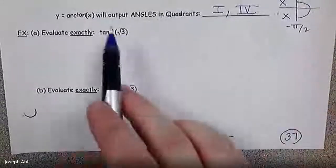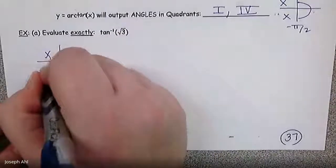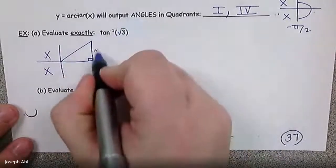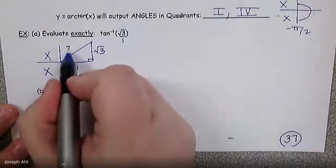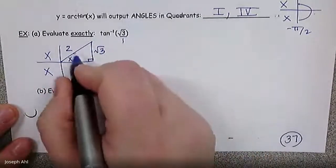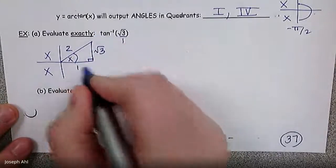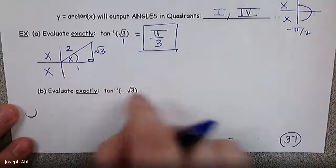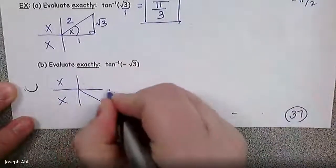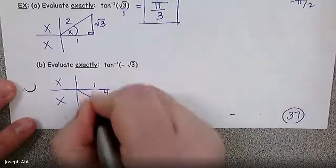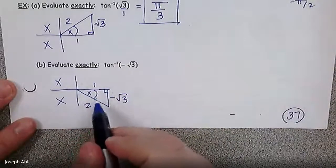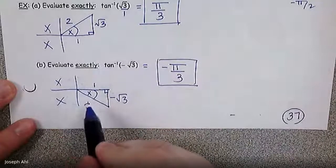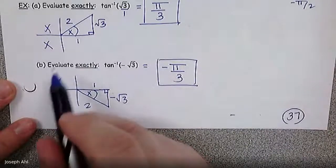For tan inverse of √3 — when this is a positive number, you're in quadrant 1. Tan is opposite over adjacent, so write this as √3/1. This is a special angle triangle, and the angle across from √3 is π/3. For tan inverse of negative √3 — that brings us into quadrant 4 where tan is negative, same reference angle π/3. Rotating clockwise that many radians, the answer is negative π/3. You'll want to naturally rotate counterclockwise, but that would bring you into restricted quadrants.